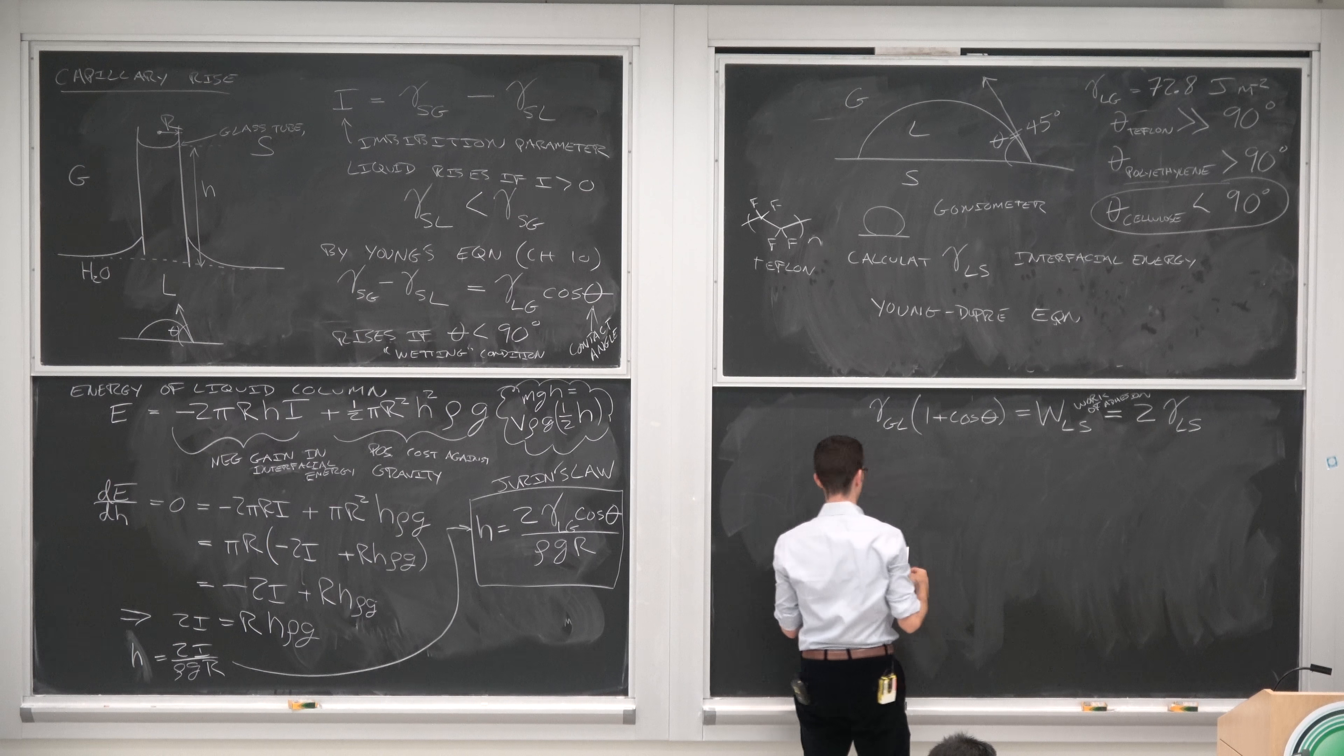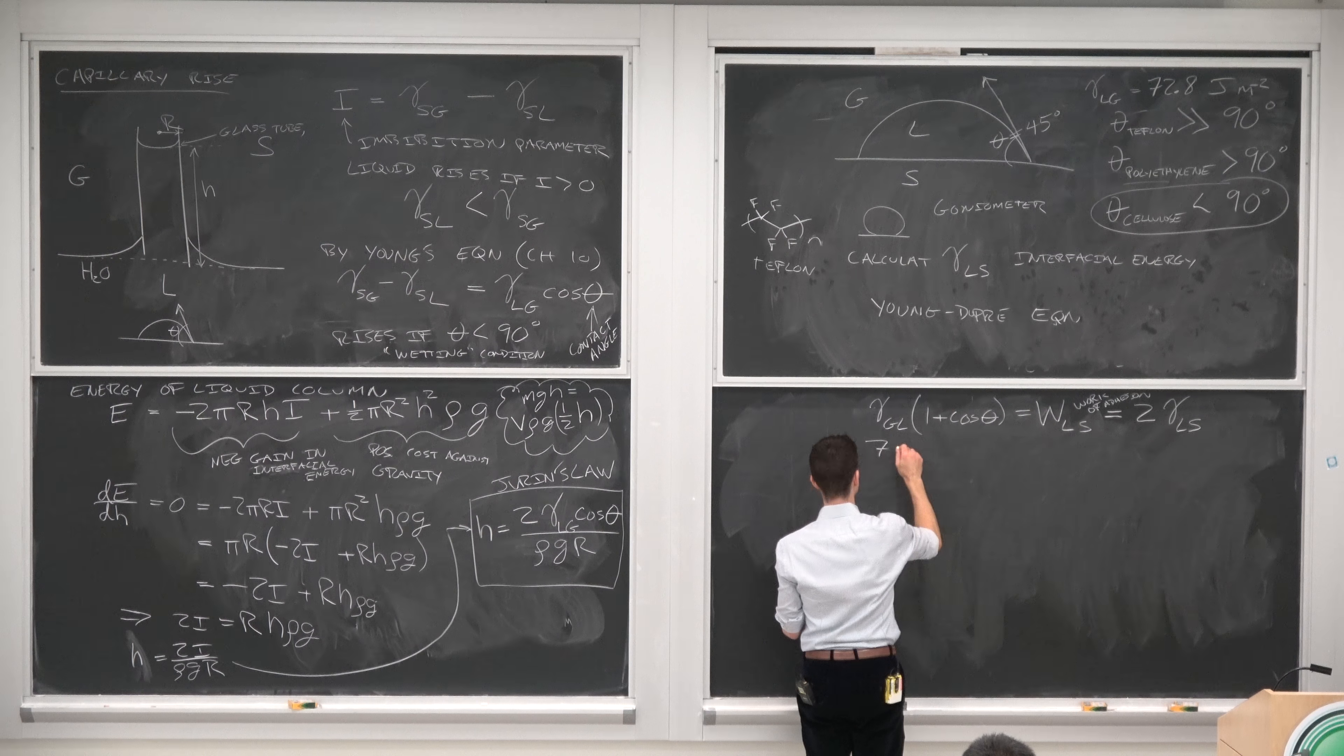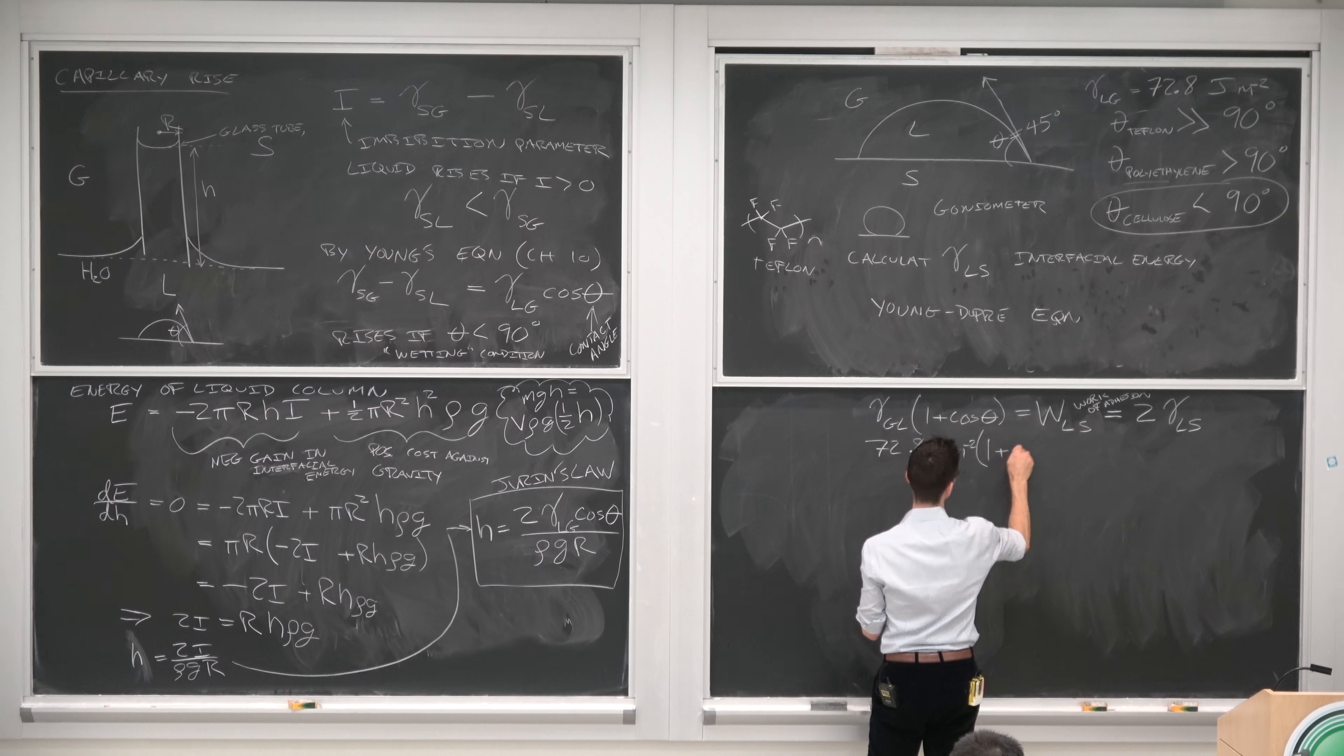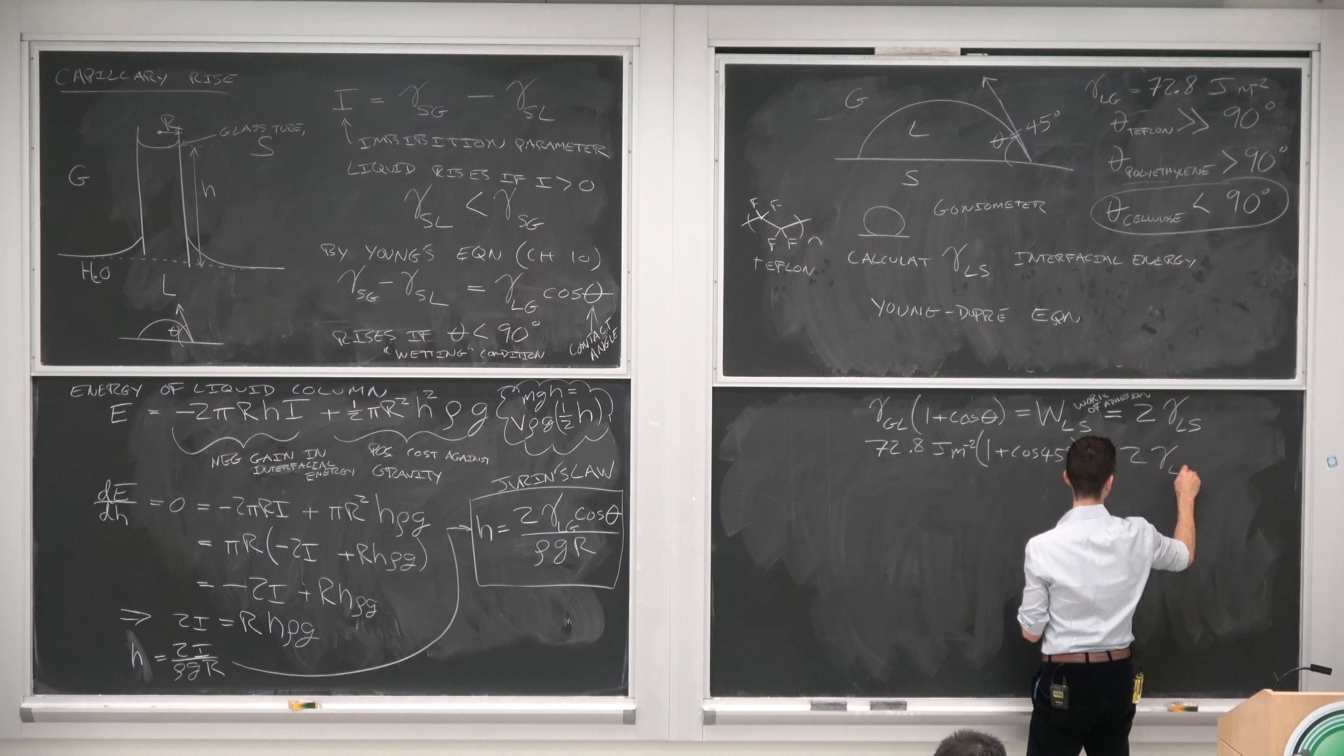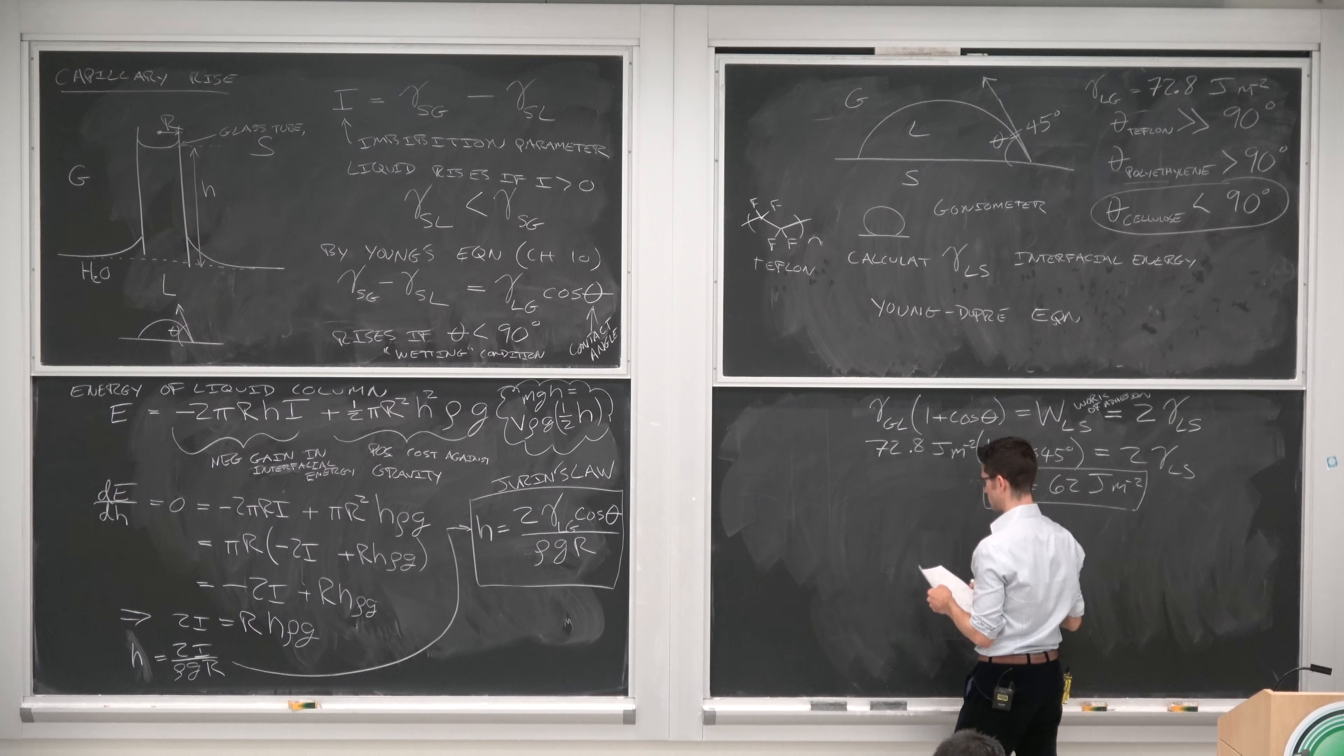So now we're just going to plug in our numbers. The gas-liquid or liquid-gas interfacial energy or surface tension is just the surface tension of water in air. So 72.8 joules per square meter times 1 plus cosine 45 degrees equals 2 times gamma liquid-solid. And gamma liquid-solid is therefore 62 joules per square meter.